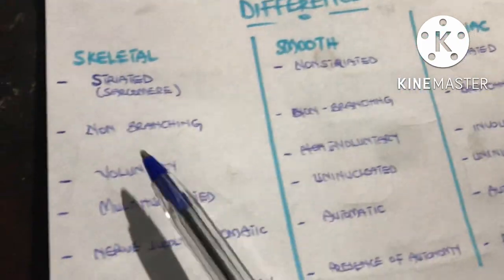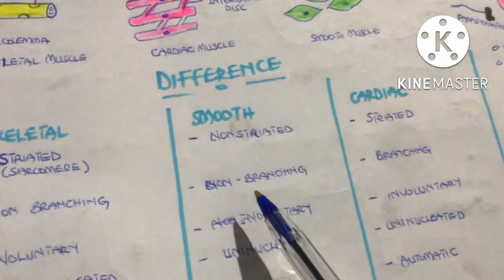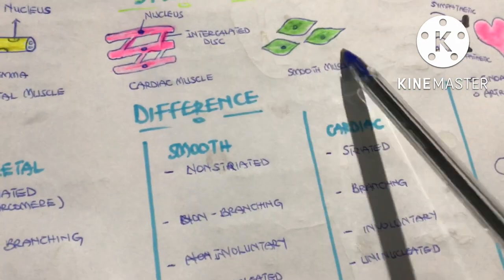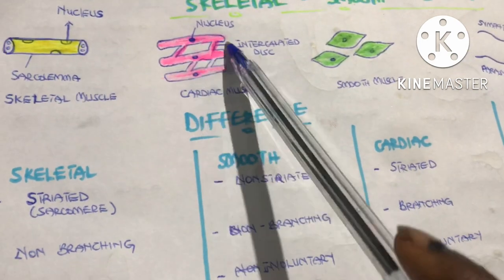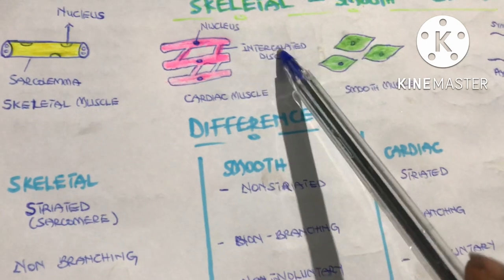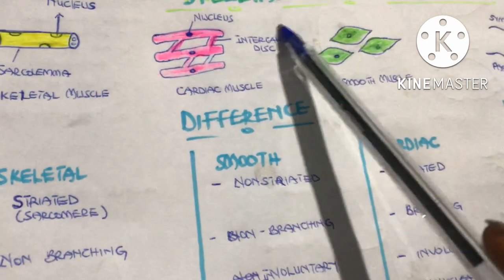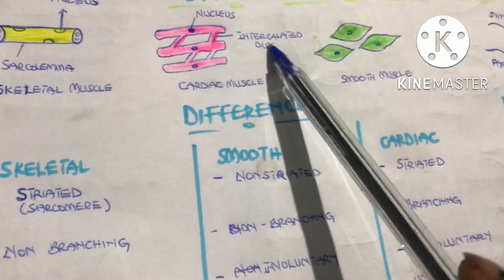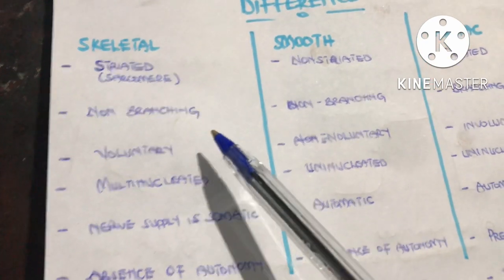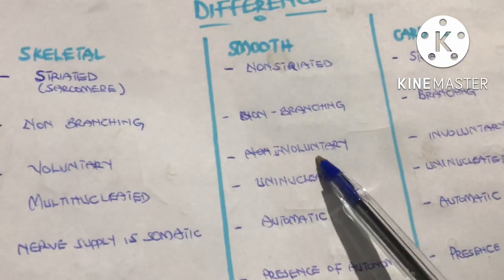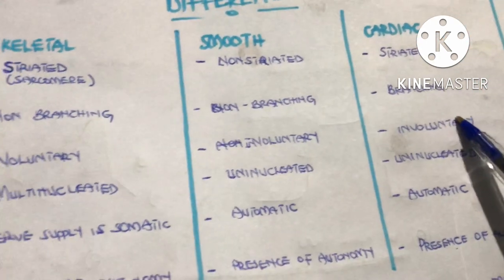The cardiac muscle is striated. The skeletal muscle is non-branching, and the smooth muscle is also non-branching, but the cardiac muscle is branched — the fibers are joined to each other by intercalated discs. The skeletal muscle is voluntary, but smooth muscle is involuntary. The cardiac muscle is also involuntary.